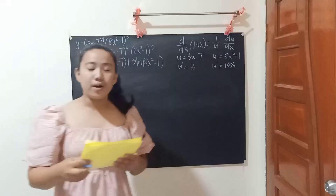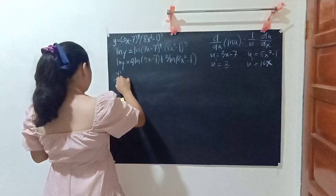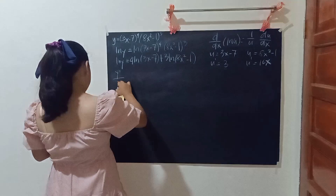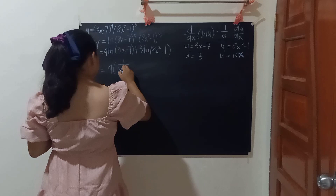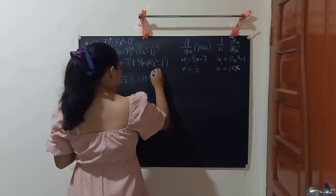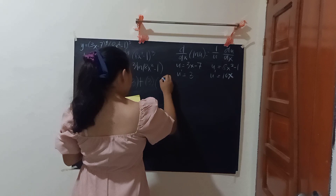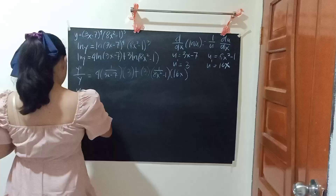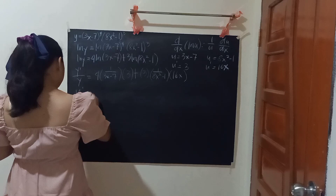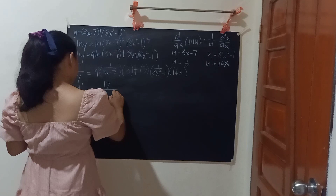Let's go ahead and apply this formula. y prime over y equals 4 times (1 over (3x minus 7)) times 3, plus 3 times (1 over (8x squared minus 1)) times 16x. Next, distribute: y prime over y equals 12 over (3x minus 7) plus 48x over (8x squared minus 1).